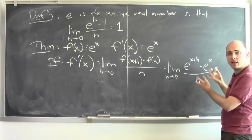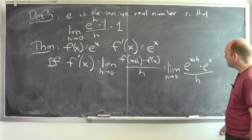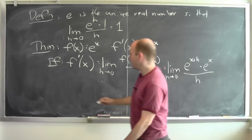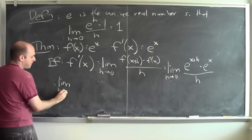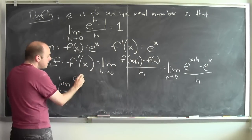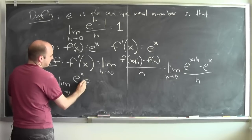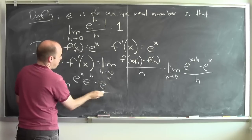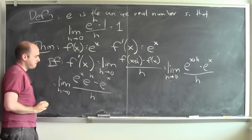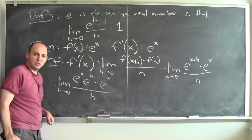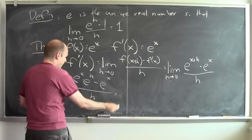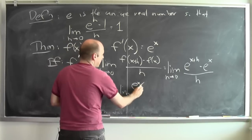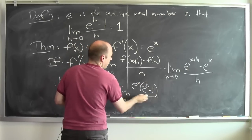How do I calculate that limit? I can use some of the properties of exponents. I know what e to the x plus h is — it's e to the x times e to the h. So this limit is equal to the limit as h goes to 0 of e to the x times e to the h, minus e to the x, over h. And I've got a common factor of e to the x in both terms in the numerator, so I'm going to pull those out. I get that this is the same as the limit as h goes to 0 of e to the x times e to the h minus 1, over h.